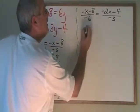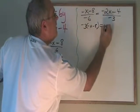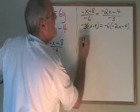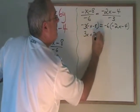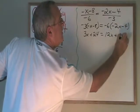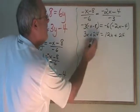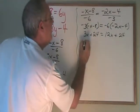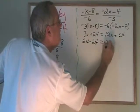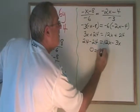Negative x minus 8 over negative 6 is equal to negative 2x minus 4 over negative 3. Cross multiplying, I get negative 3 times negative x minus 8 equals negative 6 times negative 2x minus 4. I have 3x plus 24 equals 12x plus 24. Moving all of the x's to the right and the numbers to the left, I have 24 minus 24 equals 12x minus 3x. 0 equals 9x.